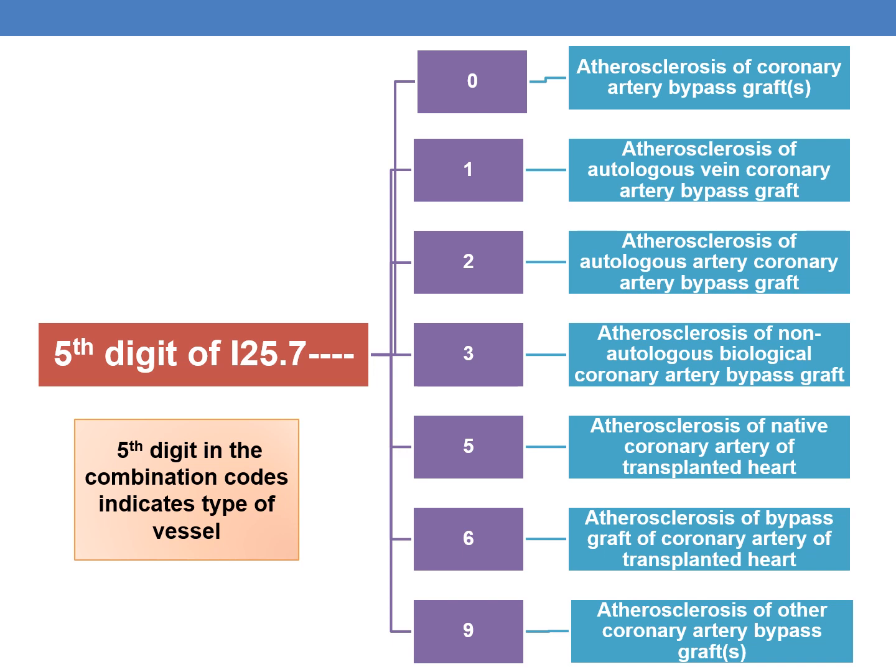The I25.7 series deals with CAD of bypass grafts of coronary artery and transplanted organs with angina. In subcategory I25.7, the fifth digit indicates the type of vessel or graft, while the sixth digit indicates the type of angina.